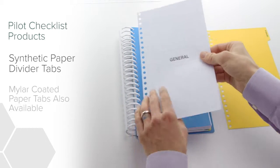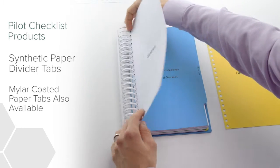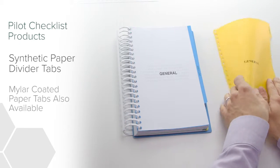Find the page you need quickly with divider tabs from Aerobind. We now offer tear-resistant synthetic paper tabs in addition to our mylar coated paper tabs.